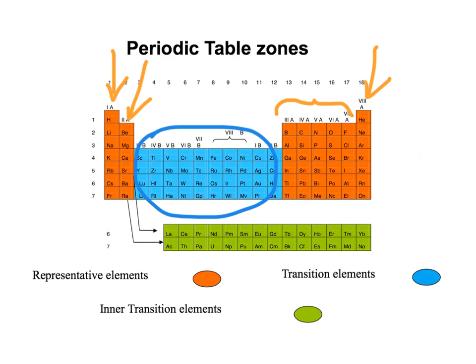In blue, you will find the transition elements. They are not very predictable. And at the end, you will find inner transition elements. Remember, these are located at the bottom of the periodic table.